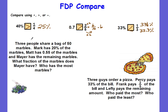Now a couple of word problems. The first one: three people share a bag of 50 marbles. Mark has 20 percent of the marbles, Matt has fifty-five hundredths of the marbles, and Mayor has the remaining marbles. What fraction of the marbles does Mayor have, and who has the most marbles?